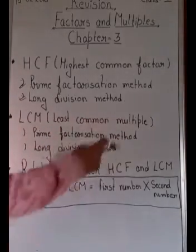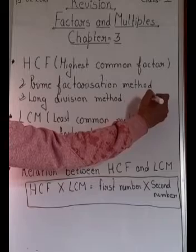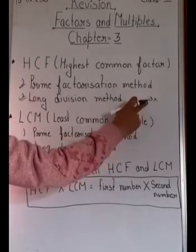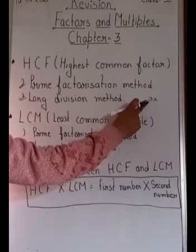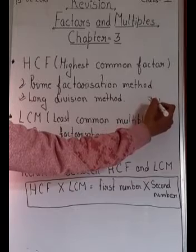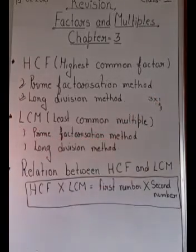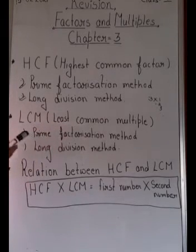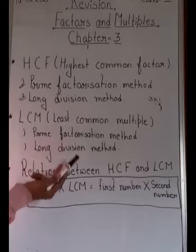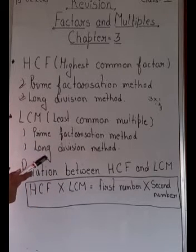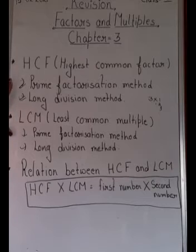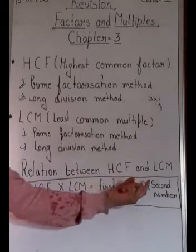Next is LCM — Least Common Multiple. Multiples are found by multiplying the given number with any counting number. For example, to find multiples of 3, multiply 3 by 1, then 2, then 3, and so on. For finding LCM, there are two methods: prime factorization method and long division method. Both are very important and you must practice both.